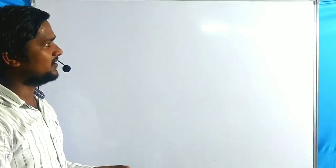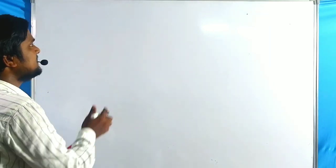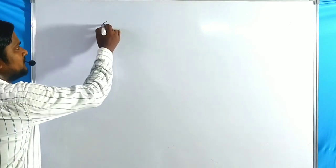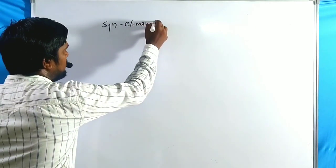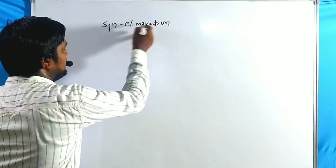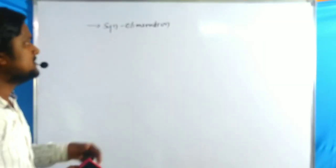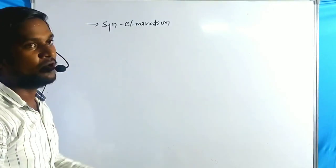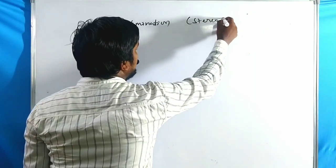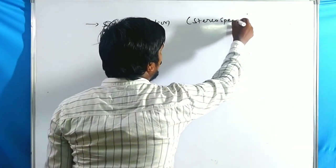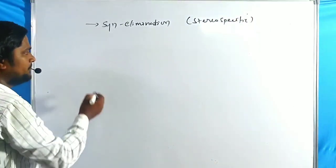Generally, the Corey-Winter reaction follows syn stereospecific elimination — syn elimination. Note this point very clearly: Corey-Winter fragmentation is very stereospecific.